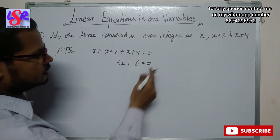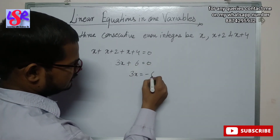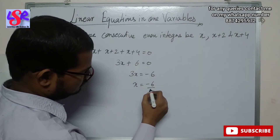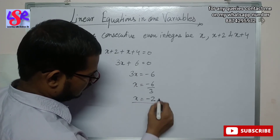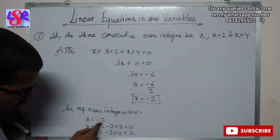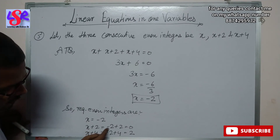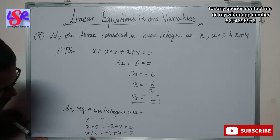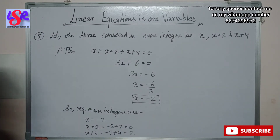Now we put 6 on the other side: 3x equals to minus 6, and x equals to minus 6 upon 3. So x equals to minus 2. The required even integers are x equals to minus 2, x plus 2 equals to 0, and x plus 4 equals to 2.